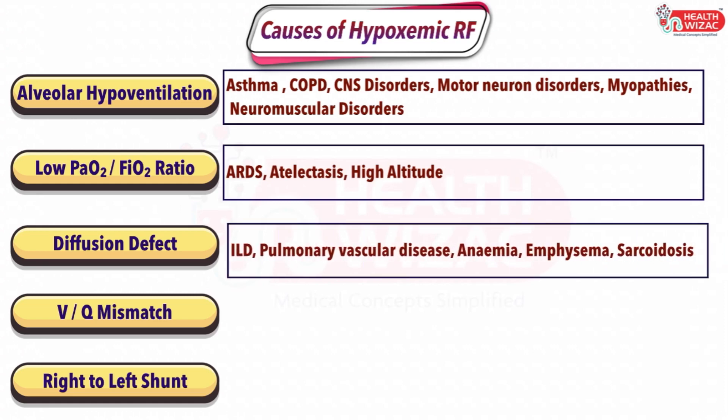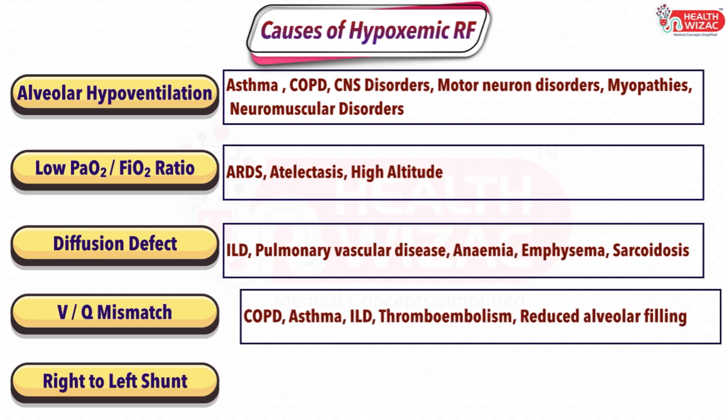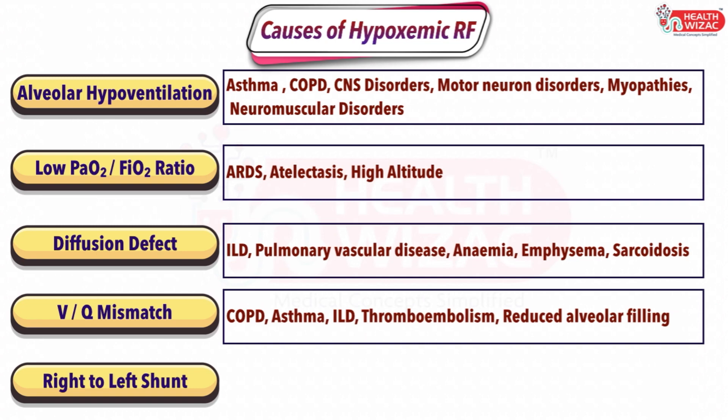Diffusion defects are present in conditions like interstitial lung disease, pulmonary vascular disease, anemia, emphysema, and sarcoidosis. VQ mismatch is seen in conditions like COPD, asthma, interstitial lung disease, thromboembolism, and reduced alveolar filling issues.